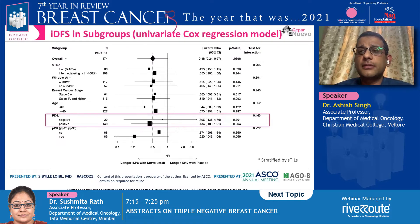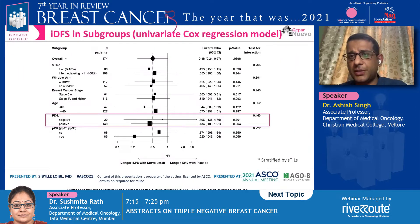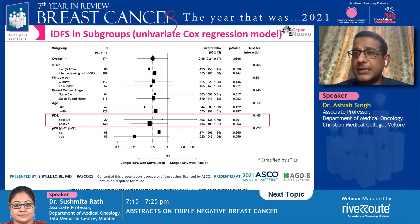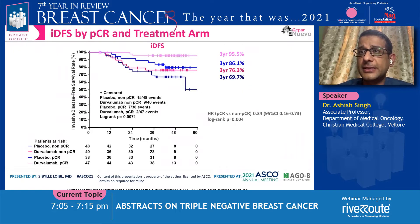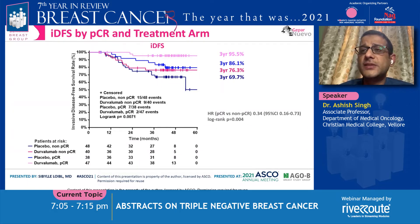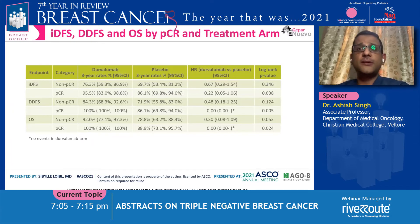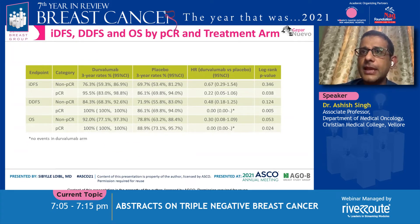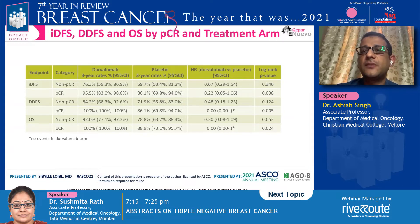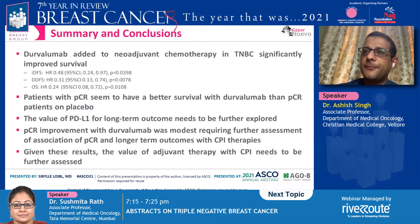Looking at the forest plot, all deltas favored Durvalumab, and the benefit was more pronounced if the tumor was PD-L1 positive. Outcomes in overall survival and distant disease-free survival were excellent if the patient achieved a pCR. Invasive disease-free survival in pCR patients was almost 95.5%, with the two events being contralateral invasive cancers. Overall survival and distant disease-free survival were 100% in patients who received chemotherapy with Durvalumab and achieved pCR. In patients without pCR in the placebo arm, invasive disease-free survival was 70%, versus 76% in those who received Durvalumab.